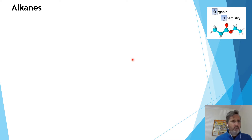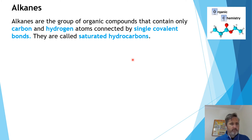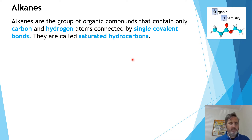The simplest group is the one that contains no functional groups and only has single bonds. These are called alkanes. Alkanes only contain carbons and hydrogens with only single covalent bonds. Because of this, they're called saturated hydrocarbons — meaning we can't add anything more to them.